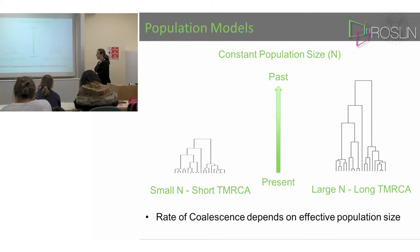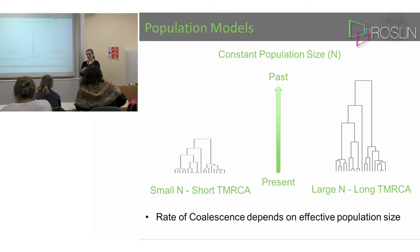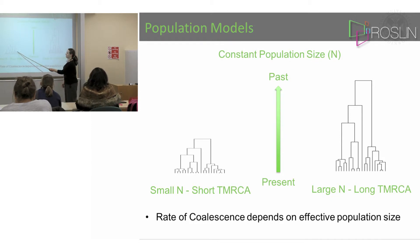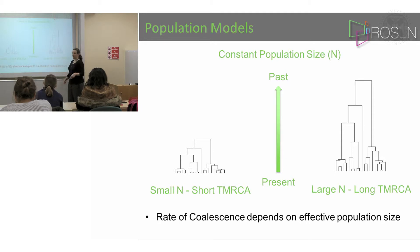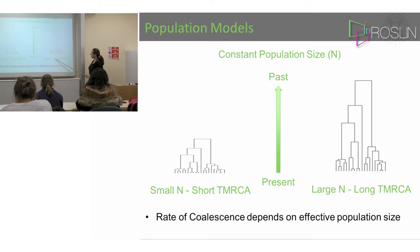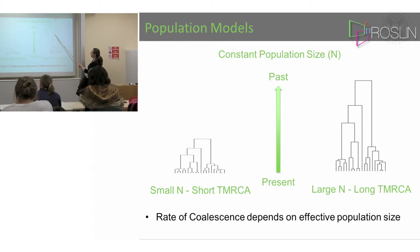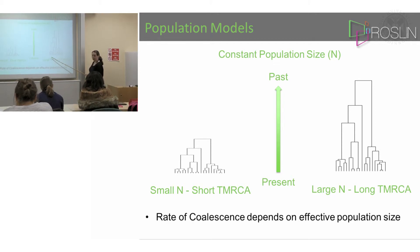With a small population size, at each generation there are not very many potential ancestors. So in the current generation, there are only a few parents in the previous generation which the current samples could have come from. This means the time to the most recent common ancestor is small. With a large population size, you have to go back a long way before all samples share a single common ancestor. Looking at these trees, you can see the rate of coalescence depends on the effective population size.